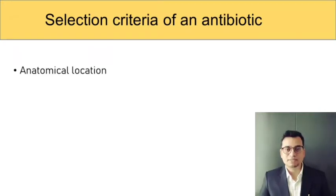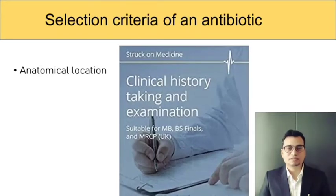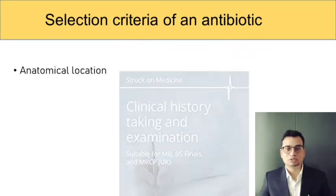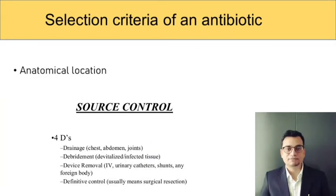A meticulous history and physical local examination will be able to localize the probable site of infection. Knowing the source of infection will also help you in planning a surgical procedure for eradication of that source, and this is known as source control, which is a definitive treatment for many difficult-to-treat resistant infections in ICU.